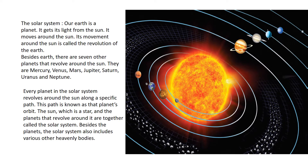Now we will see what is the solar system. Our Earth is a planet. It gets light from the sun and moves around the sun. Its movement around the sun is called the revolution of the Earth. Besides Earth, there are seven other planets that revolve around the sun.